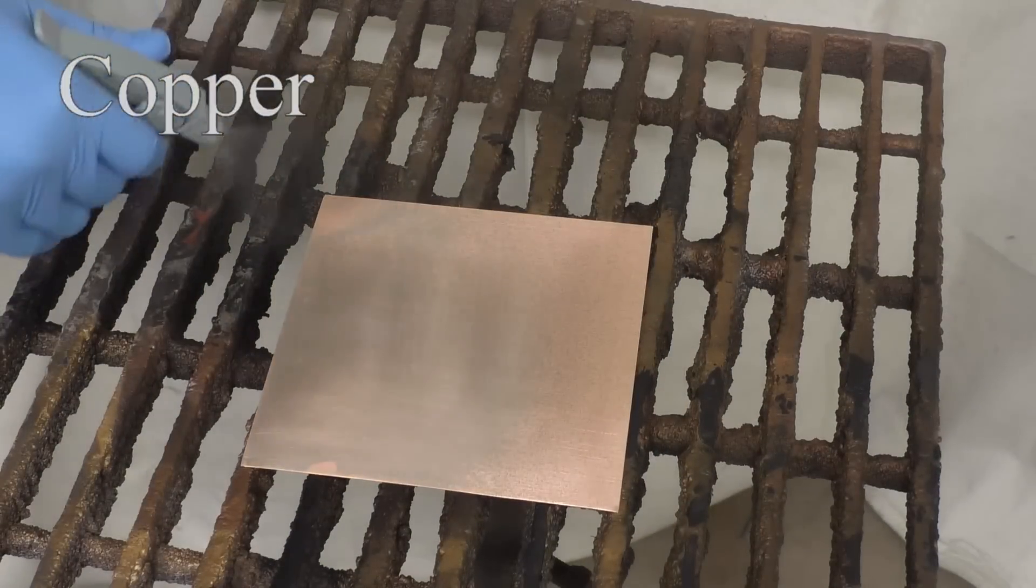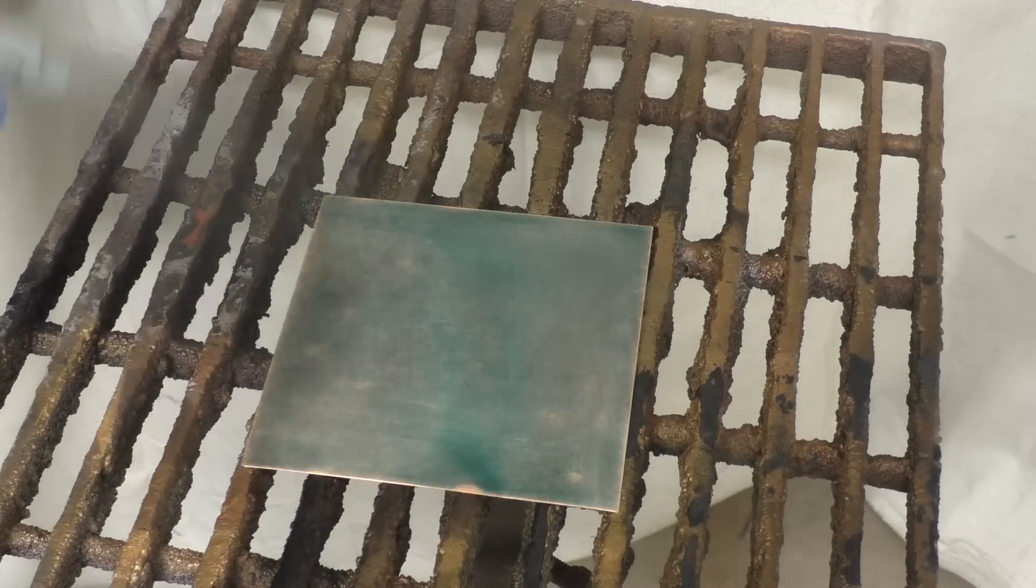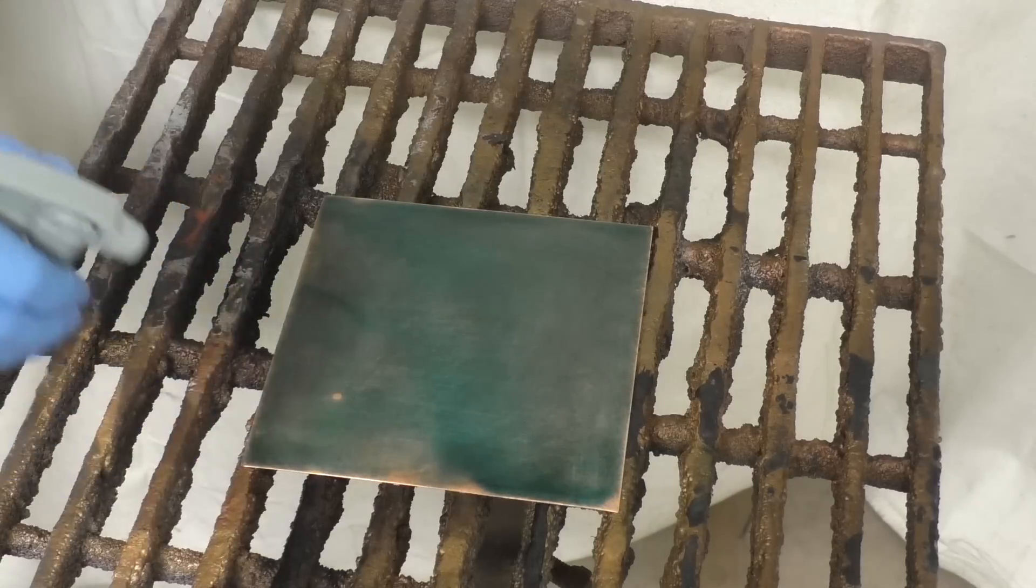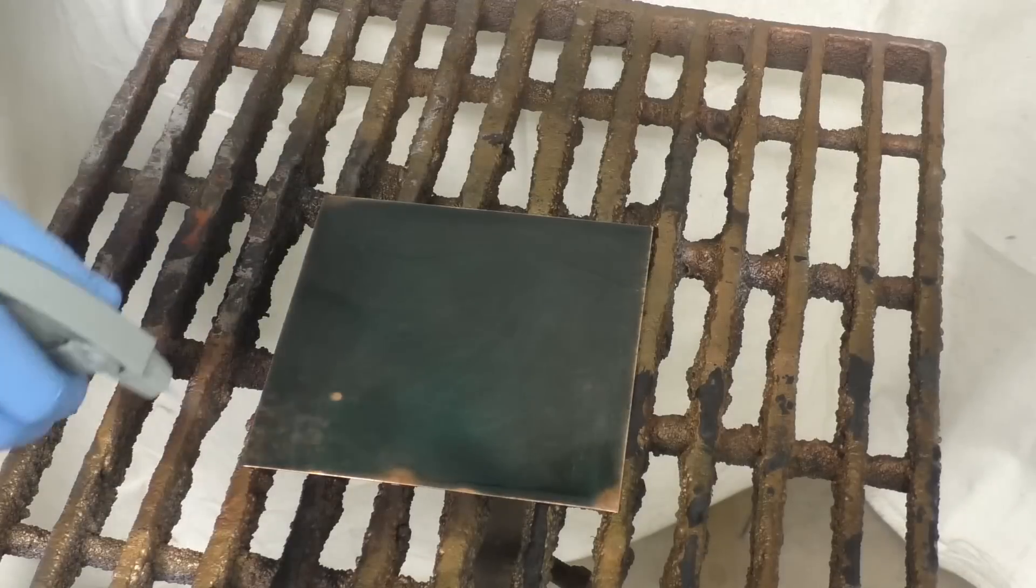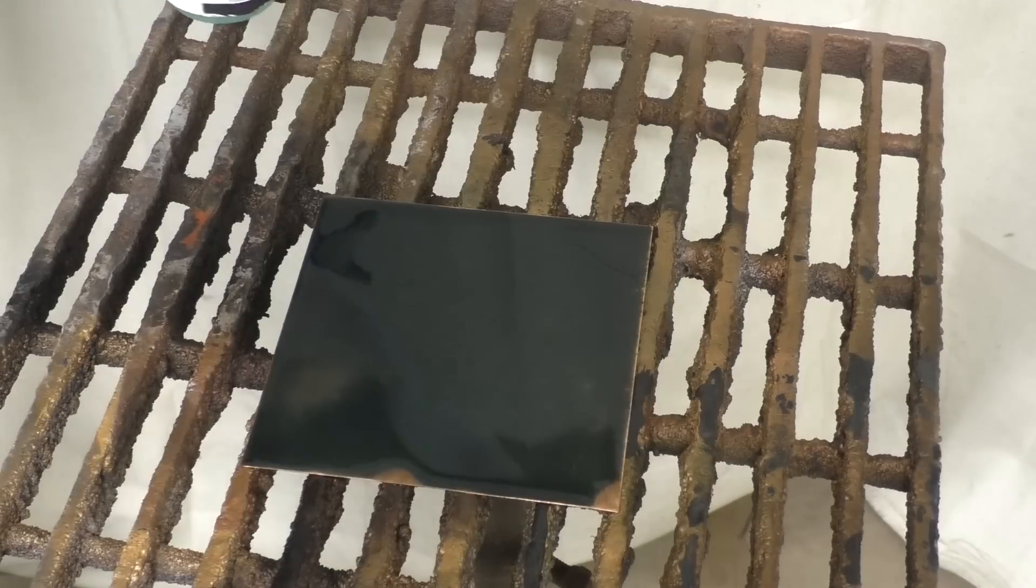Finally we've got the copper to show and copper is going to react very similarly to bronze and brass. It's good to note here that all of these pieces were just prepped with the Sculpt Nouveau metal cleaner and a scotch brite pad. There was no sanding on any of these, just a good thorough cleaning.